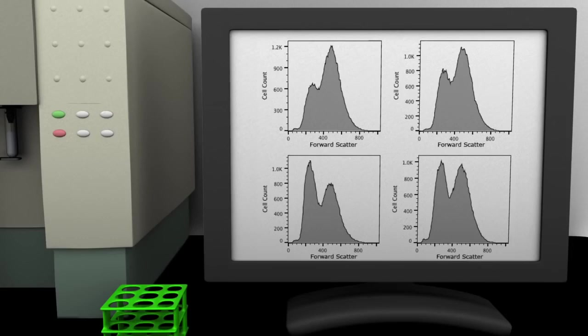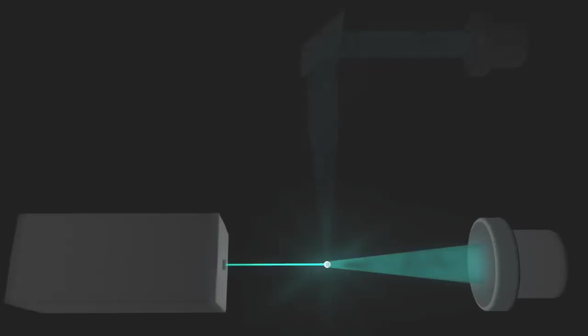The computer converts these data into a histogram plot with the amount of forward scattered light on the x-axis and the number of cells on the y-axis.